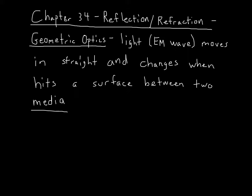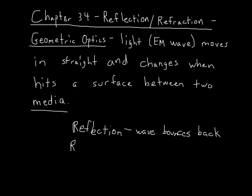Media is basically the interface between two different regions. So let's say I'm shining light from the air into a pool or something. When my light travels in a straight line and hits the surface and changes its direction, it does this by either reflecting — a wave that bounces back — or with refraction.